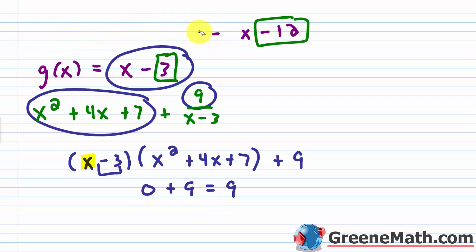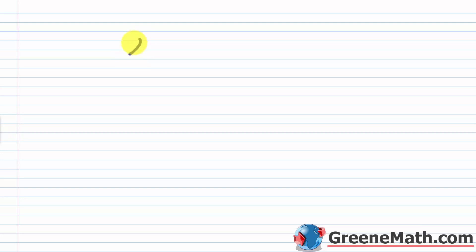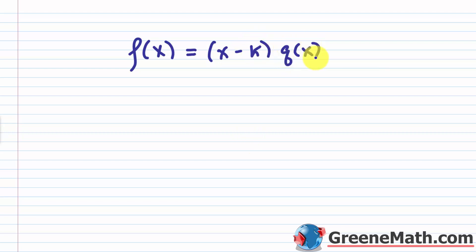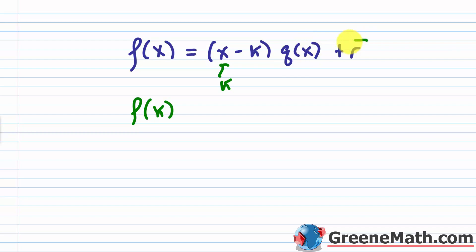For a more general view — what you'll see in your textbook — we write: f of x equals x minus k, which is your divisor, times q of x, which is your quotient, plus r, which is your remainder. If I want to find f of k, plugging in k gives k minus k equals 0, times whatever the quotient is equals 0, so I'm just left with my remainder r. That's why this works. If you want to find f of some number, you can just do synthetic division.